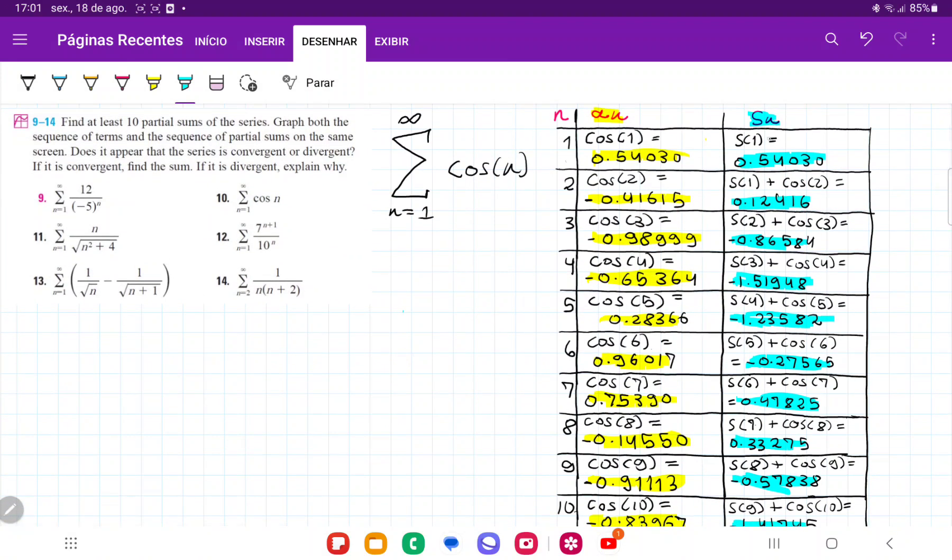And then on the third column, I have the sum. So for the first sum, it's just the first one, it's just cosine of 1. And then for the second one, it's the first sum, so 0.540, plus cosine of 2. And then for the third one, it's cosine of 3, plus the previous sum, plus s2.